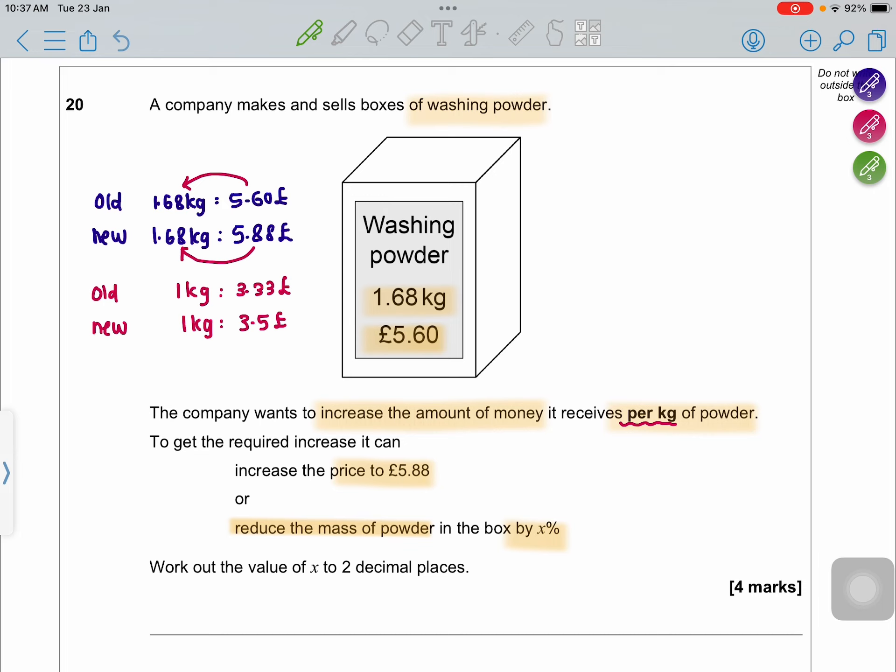So now what is the scenario? You are telling the seller, 'I am just going to pay you £5.60 but you give me a reduced amount of the washing powder.' How much will it be? What will happen to this 1.68 kg now?